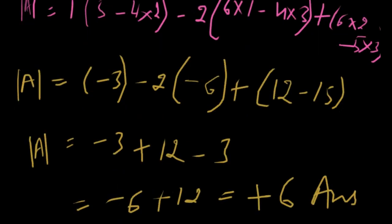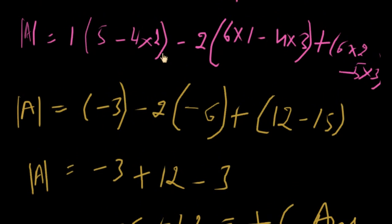Expand more. 5 minus 8 is equal to minus 3. 6 minus 12 is minus 6. And 15 minus 12 is 3.